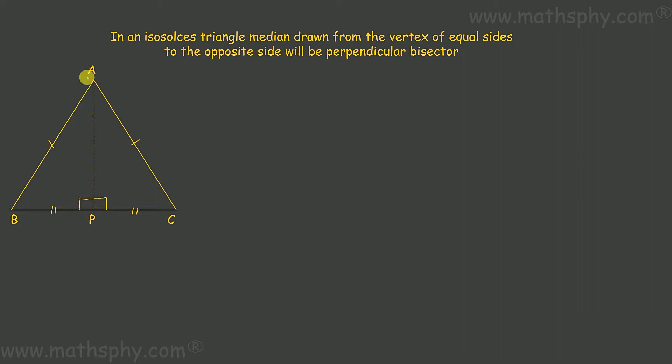Now suppose in place of AB and AC, I have AB and BC as equal. In that case, B will be the vertex of equal sides. If I draw a median from B to AC, suppose this is the point where this median comes, this is Q. In that case, this angle will be 90 degrees and AQ and CQ will be equal.